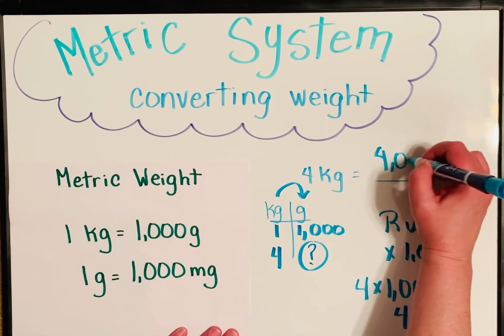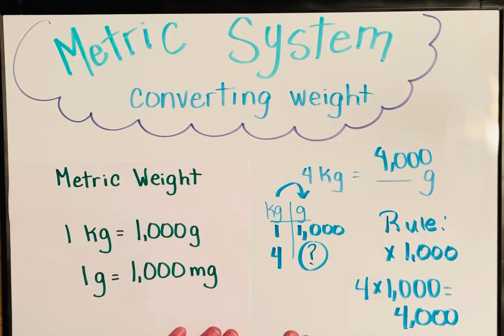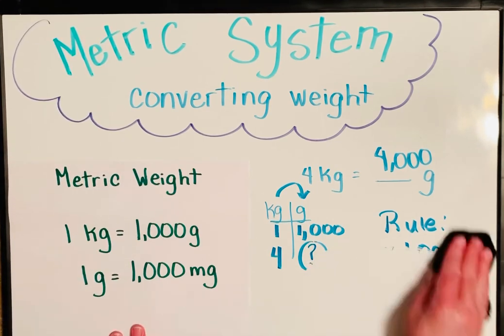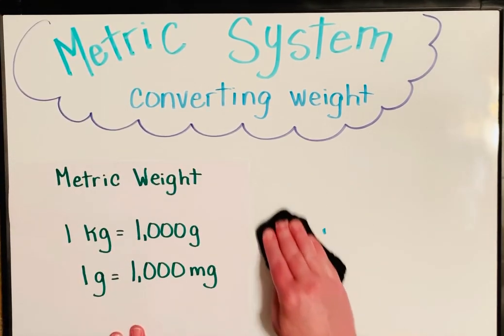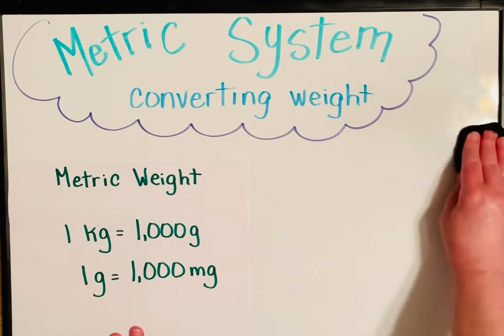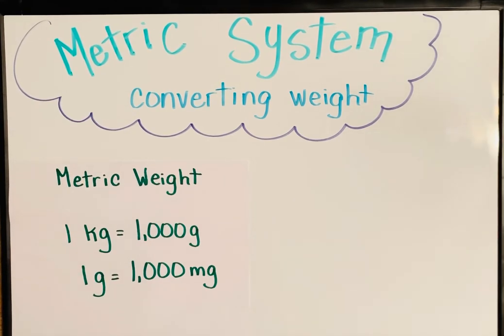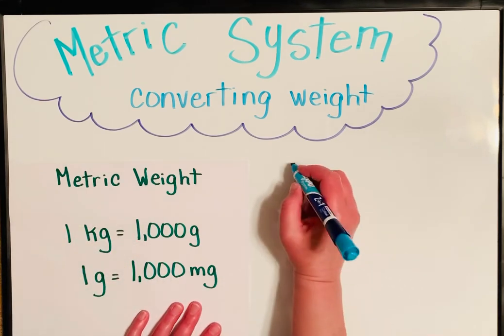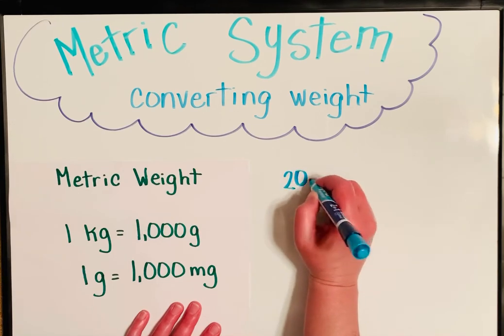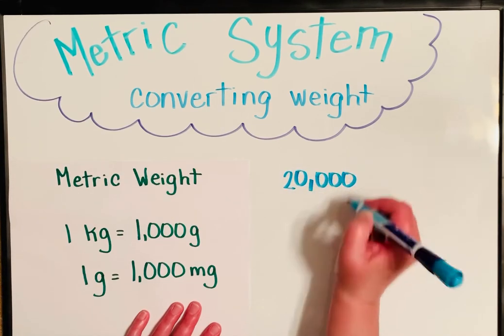Okay, let's look at a couple more. I'm going to erase this. It's pretty simple, the metric system. Once you get the hang of multiplying by those tens and hundreds and thousands, it's really a piece of cake. You just have to know your rule. Let's do another one. Let's say I had twenty thousand milligrams and I want to know how many grams.